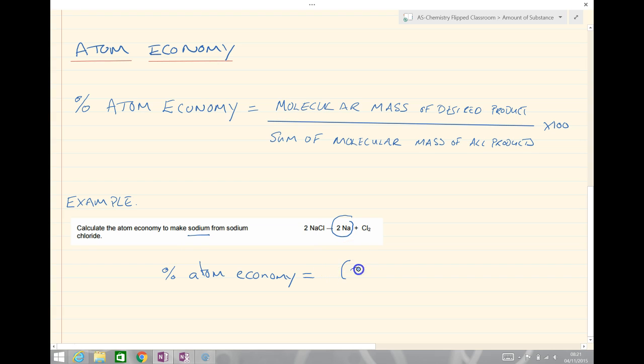So we've got two lots of 23 over the sum of the molecular mass of all products. Or, because masses conserve, the sum of all of the reactants, so we've got 2 times 23 plus 2 times 35.5 times by 100.